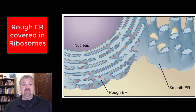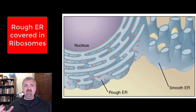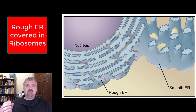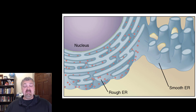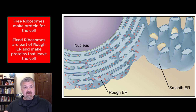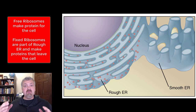DNA is converted into RNA in the nucleus. Then the messenger RNA, once it's processed, is going to snake out of the nucleus. If it finds a free ribosome — one living on its own — it's going to be translated into a protein that's used by that cell. If it finds itself at a fixed ribosome, it'll be producing a protein that's going to travel through the endoplasmic reticulum and work its way out of the cell.